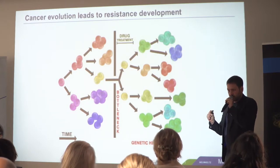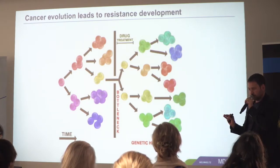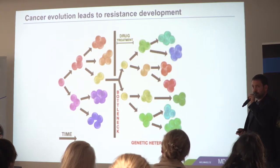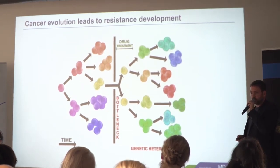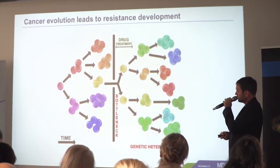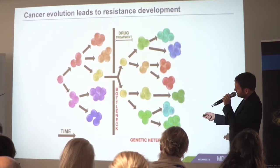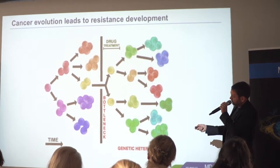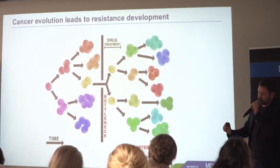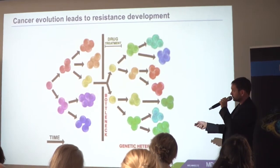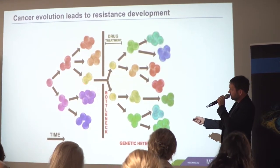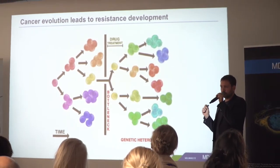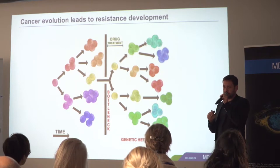Evolution can give us cancer — that's bad — but even worse, it also leads to resistance development in the clinic when we start applying therapy. The situation is similar: we have a cell dividing, slightly different DNA, and most mutations don't do anything, but there might be one mutation — a minor subclone — a small set of cells that has acquired a mutation making it a little bit resistant to the treatment we'll apply.